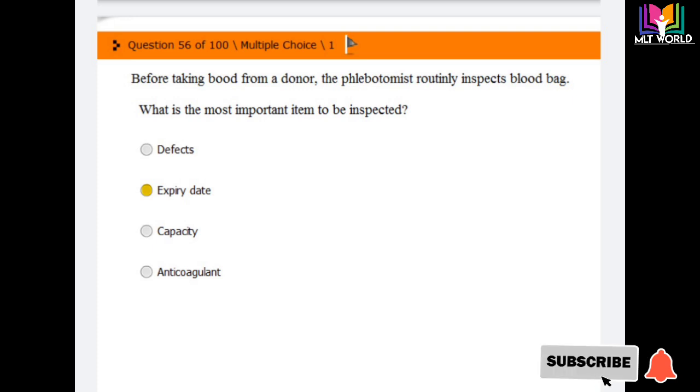Question number 56: Before taking blood from a donor, the phlebotomist routinely inspects the blood bag. What is the most important item to be inspected? Options are defects, expiry date, capacity, and anticoagulant. The answer is expiry date is the most important item to be inspected when doing routine inspection of the blood bag to take blood from a donor.